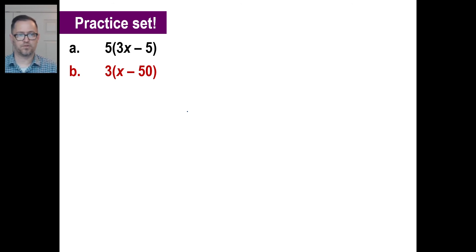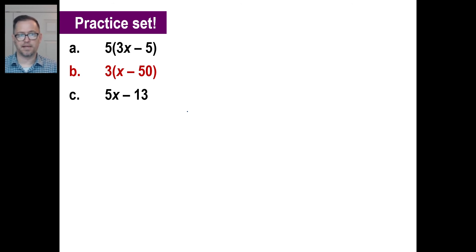Pause it and try C. C is 5 times X minus 13: 5(X − 13). You can use whatever letter you want — A, B, N, X, whatever.